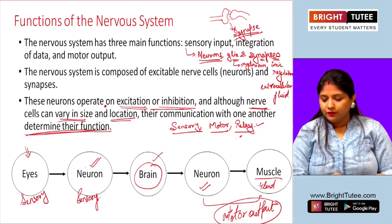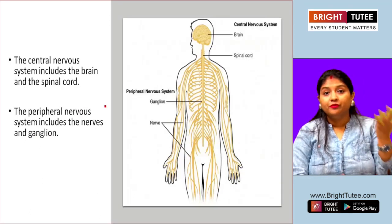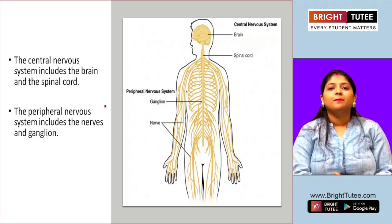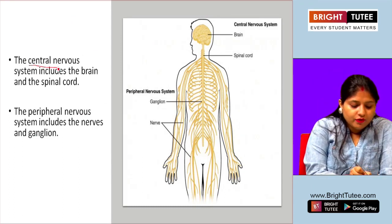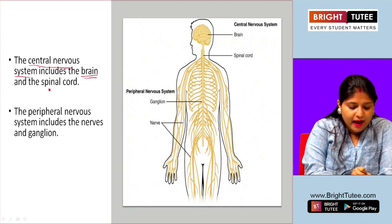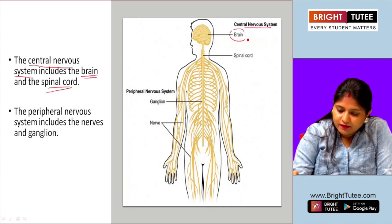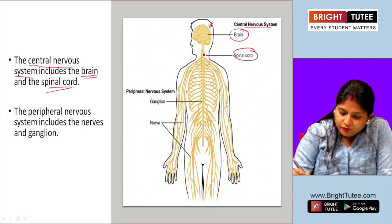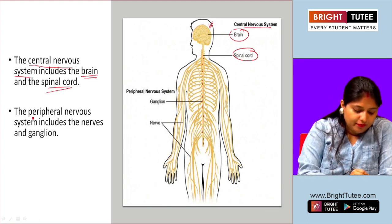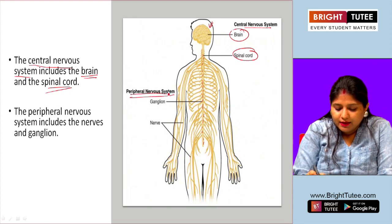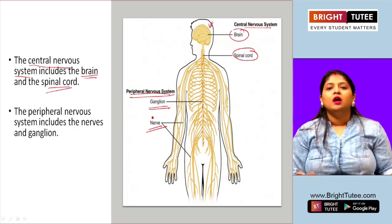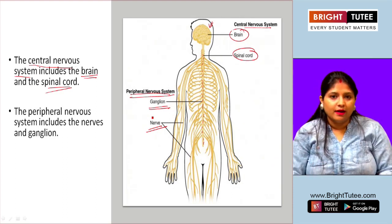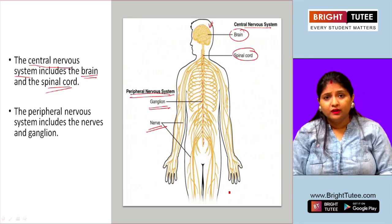The nervous system is composed of two main parts. First is the CNS — the central nervous system — which includes the brain and spinal cord. Second is the PNS — the peripheral nervous system — which consists of the ganglion and the nerve. We are going to talk about both of these parts.